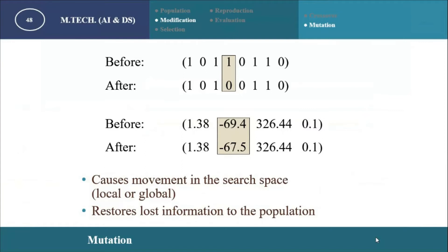In the case of crossover, it is a global search procedure where large changes are made in a chromosome. But in the case of mutation, it is a local search procedure in which very minor, very small changes are made in a chromosome.